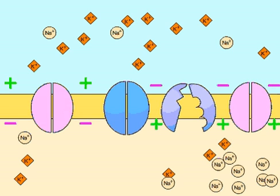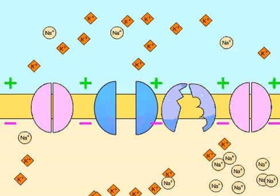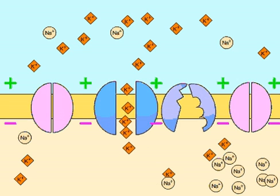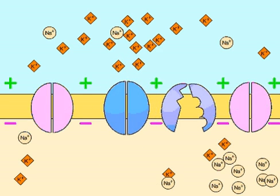In this way, the action potential travels down the neuron like a wave. In the wake of the action potential, potassium leaves the cell, restoring the negative charge inside the neuron.